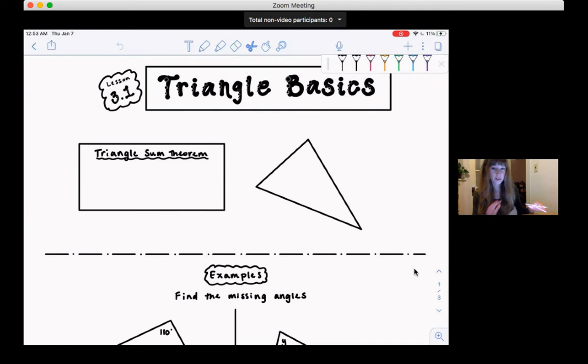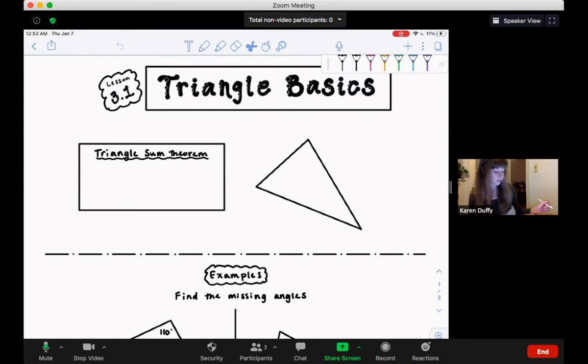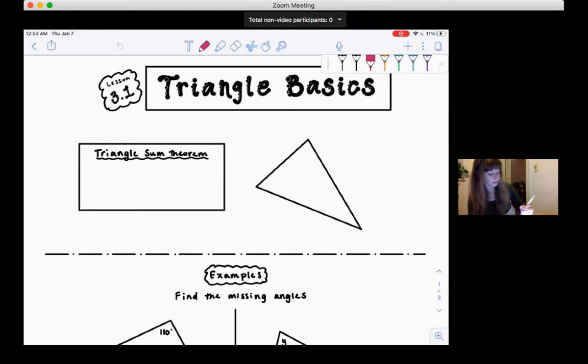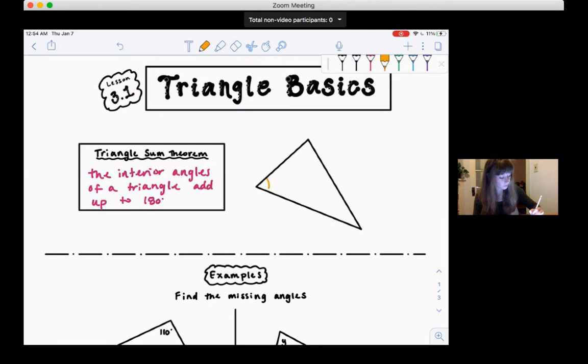Okay, so the first foundational piece of information about triangles is called the Triangle Sum Theorem, and this tells us what the angles in a triangle add up to. So the Triangle Sum Theorem says that the interior, or inside, angles of a triangle add up to 180 degrees, and that's true for any triangle. So like here's a random triangle right here, and the Triangle Sum Theorem says that this angle plus this angle, whatever number degrees this angle is, plus whatever number of degrees this third angle is, has to be 180. So those three angles add to 180.